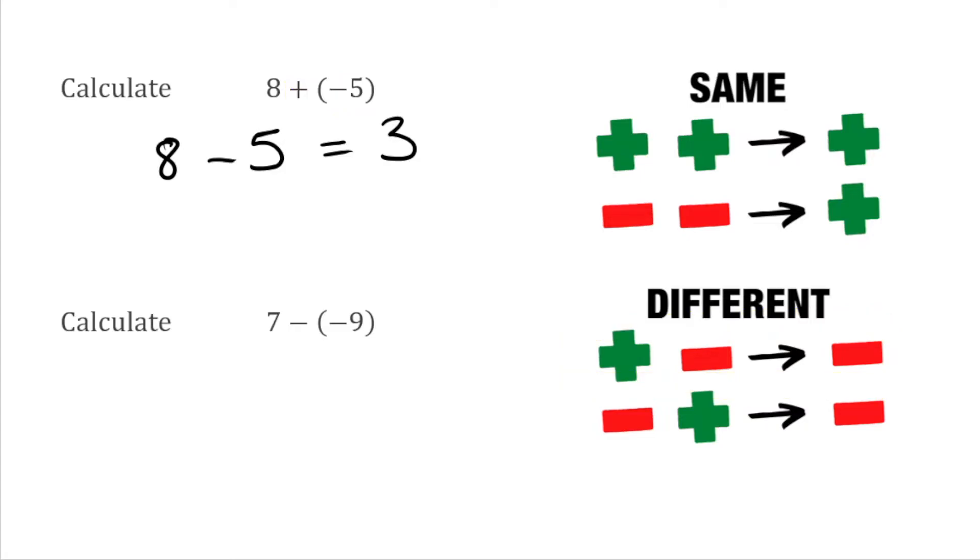Moving on to our next example, this time we have 7 take away negative 9. This time I've got a double sign, but they're both the same - two negatives, which make a positive. So I can rewrite this question as 7 plus 9, which is a lot easier to do. 7 add 9 is 16, and that's the answer.